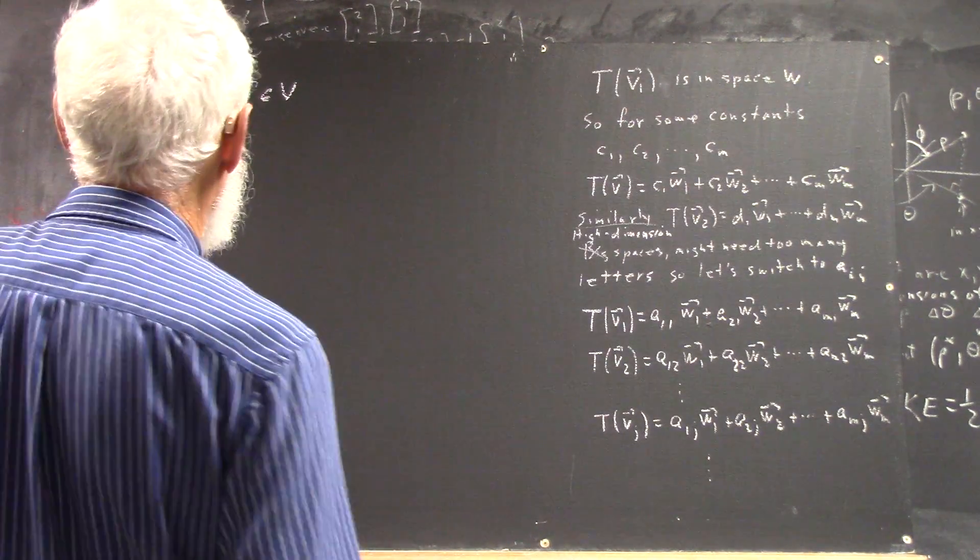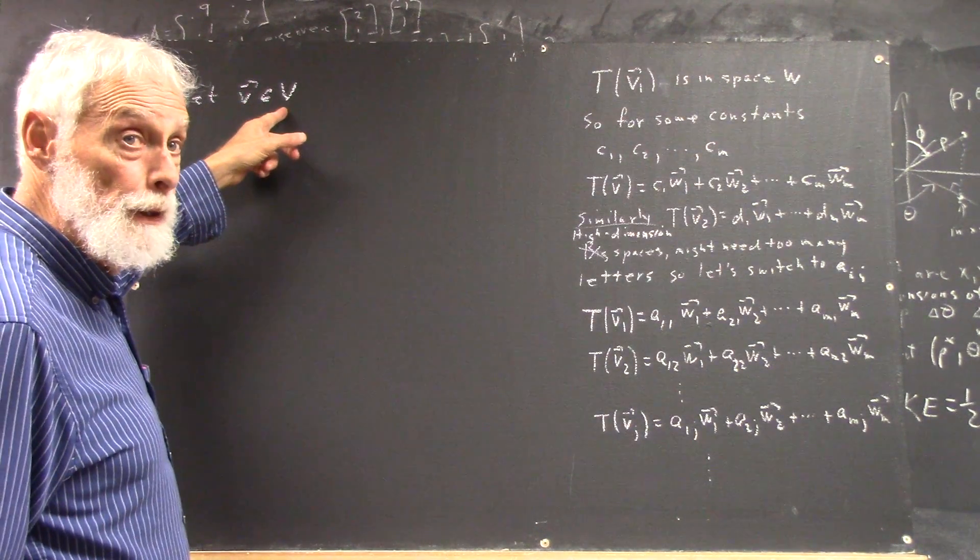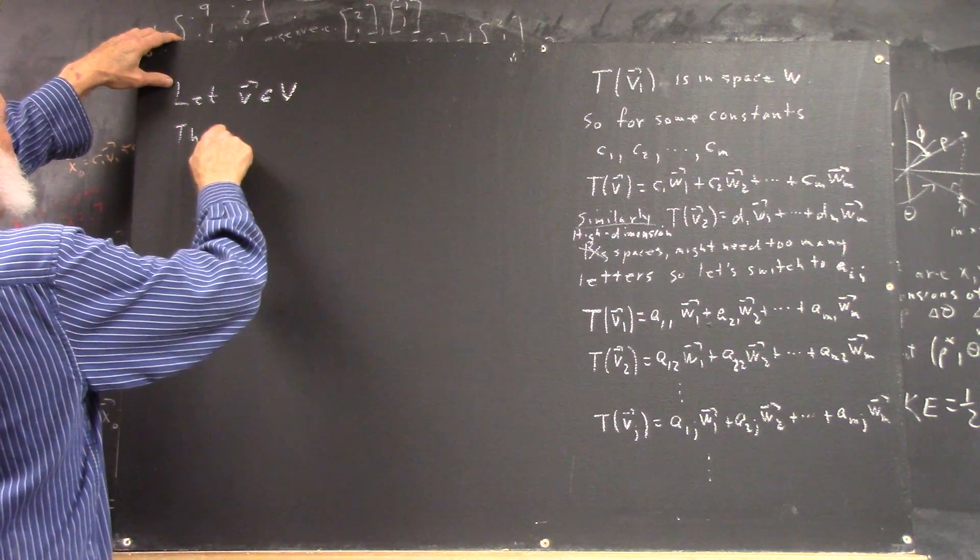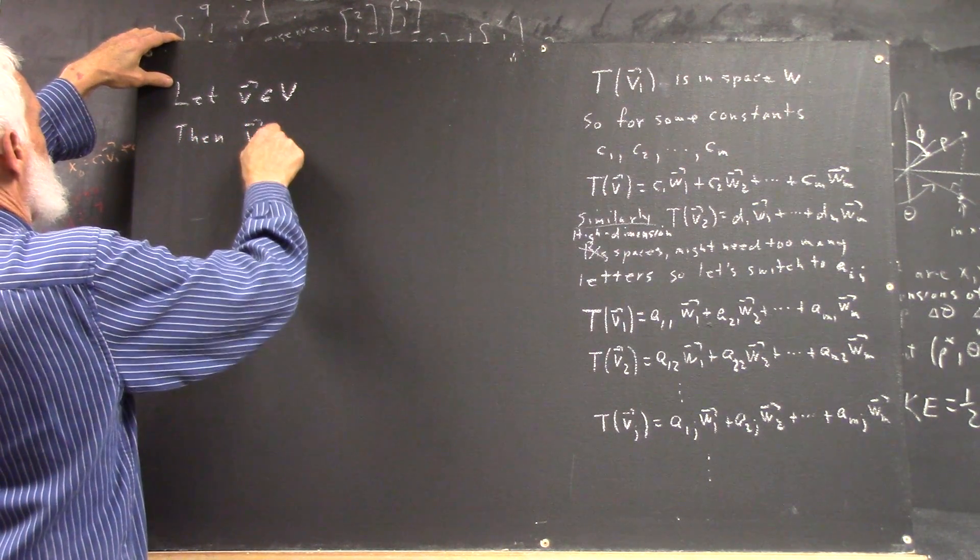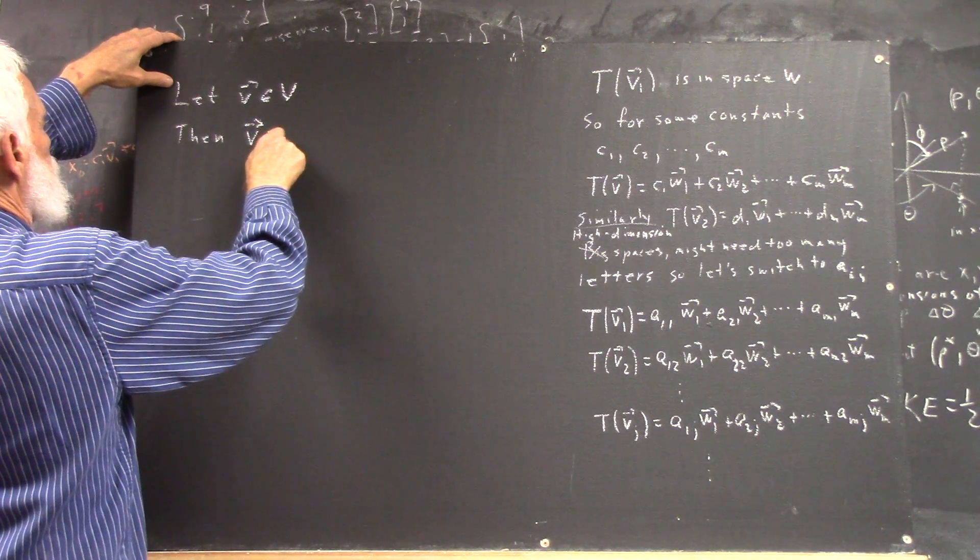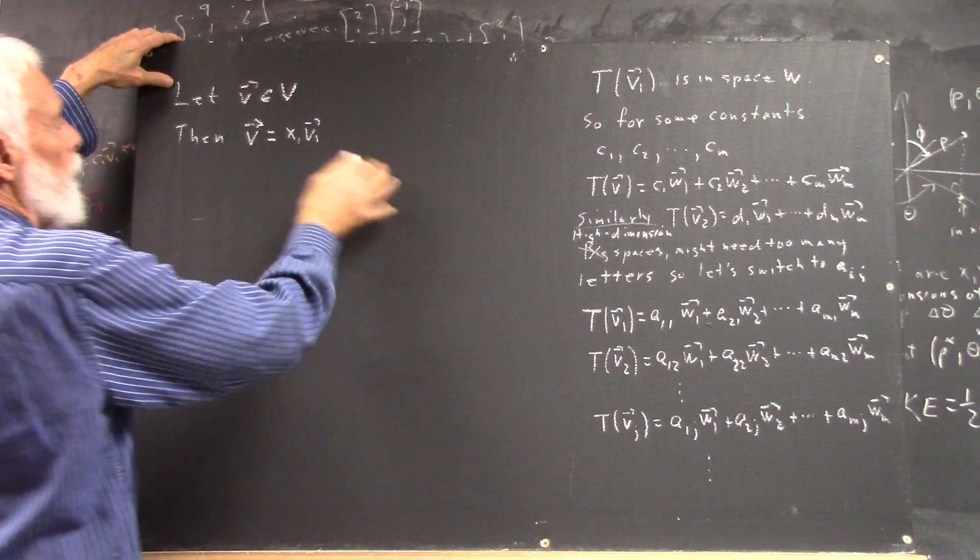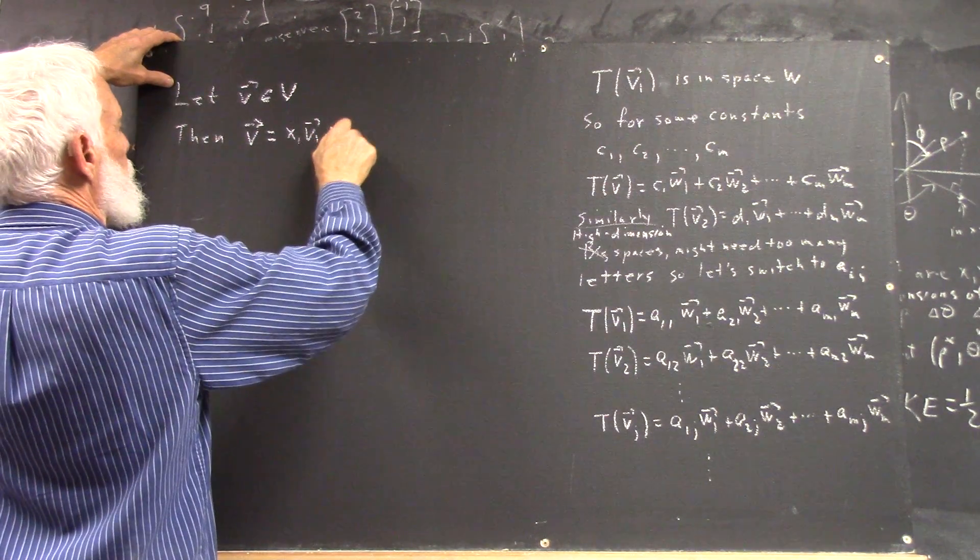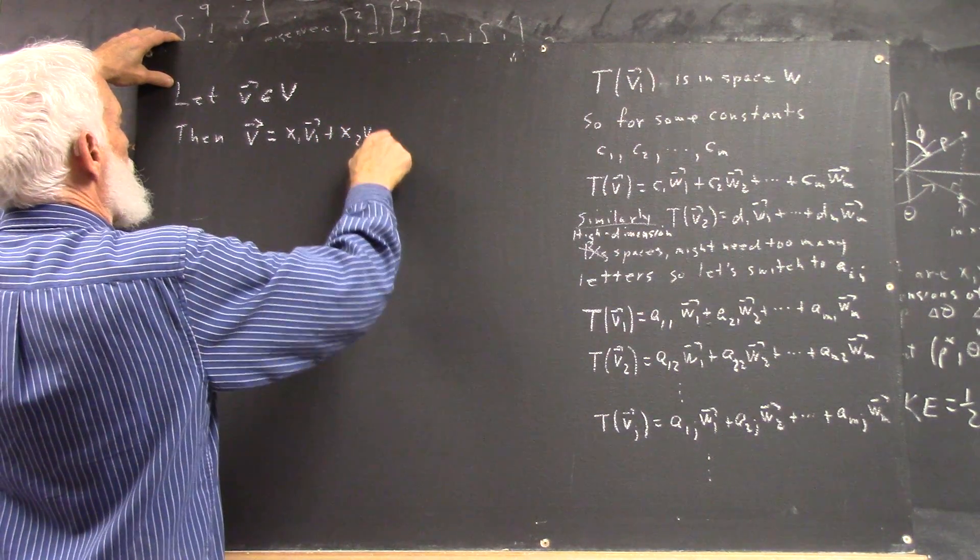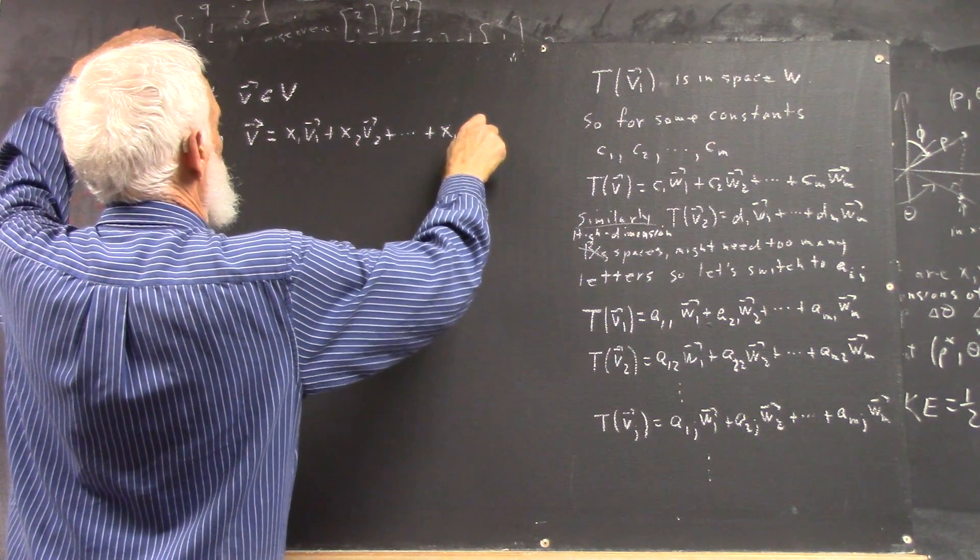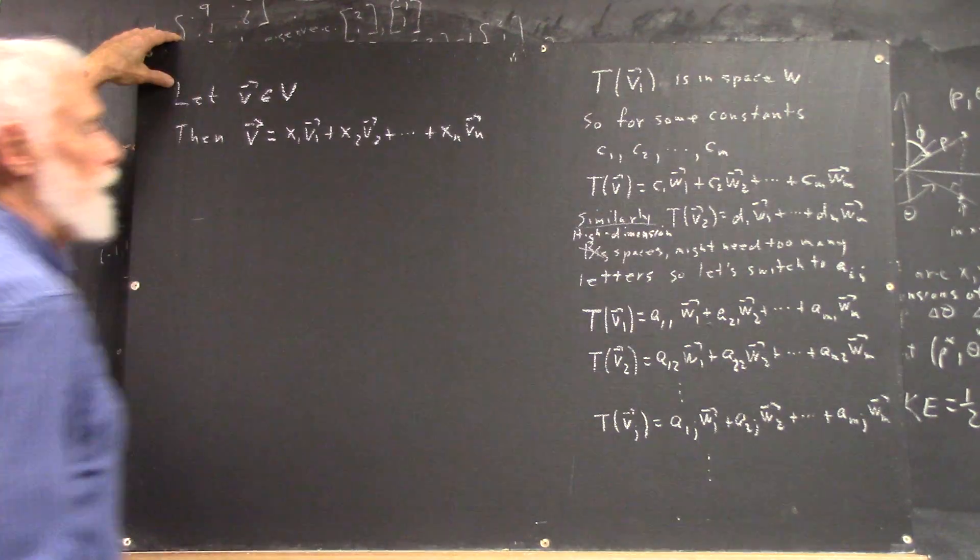Okay, if vector v is in our first vector space V, then I'm going to write v as x1*v1 up through xn*vn.